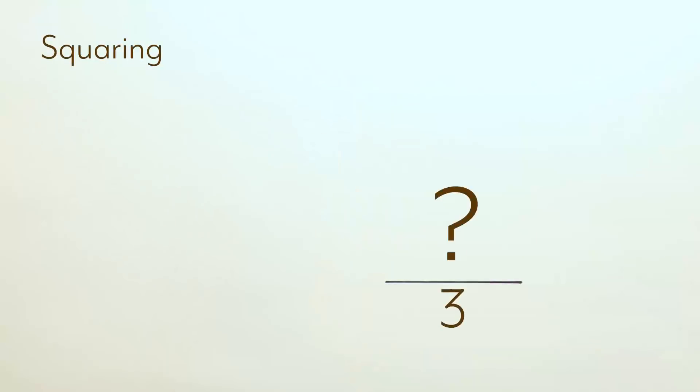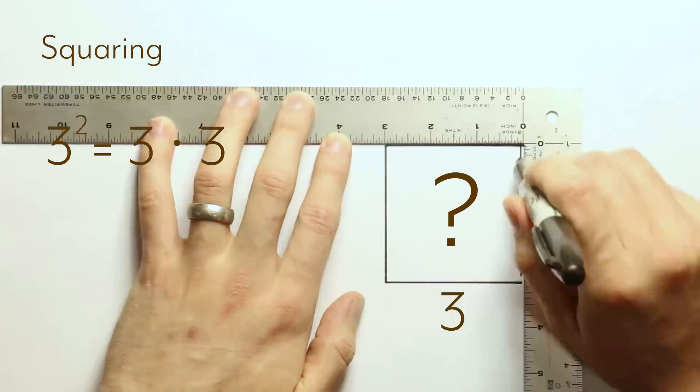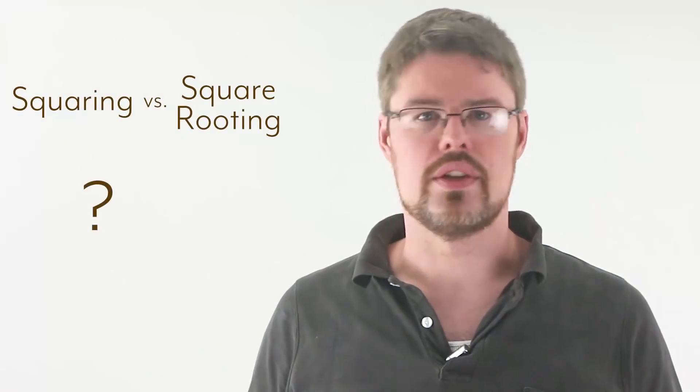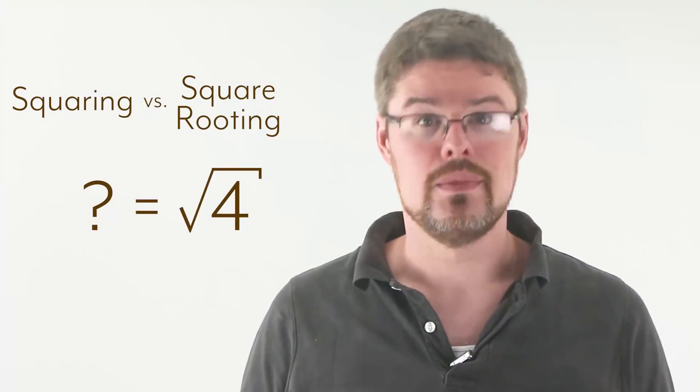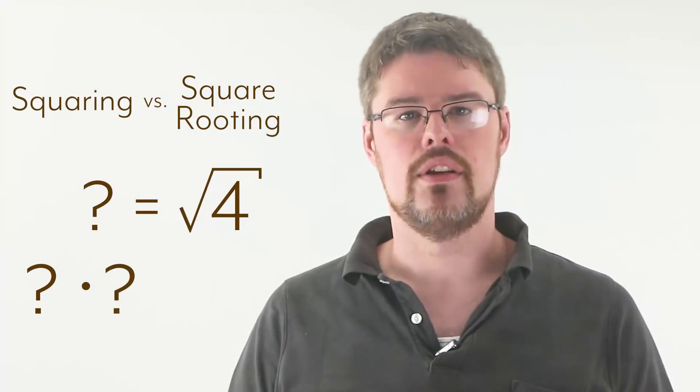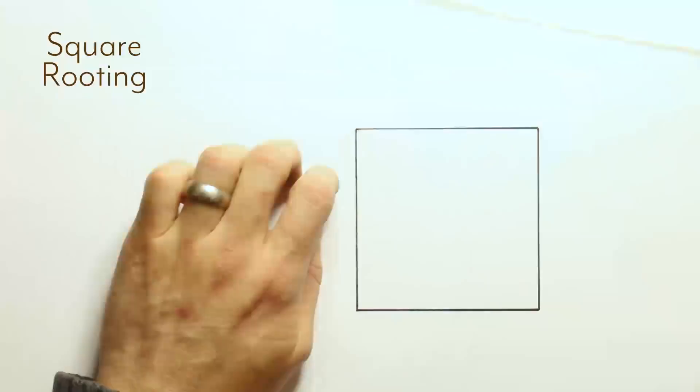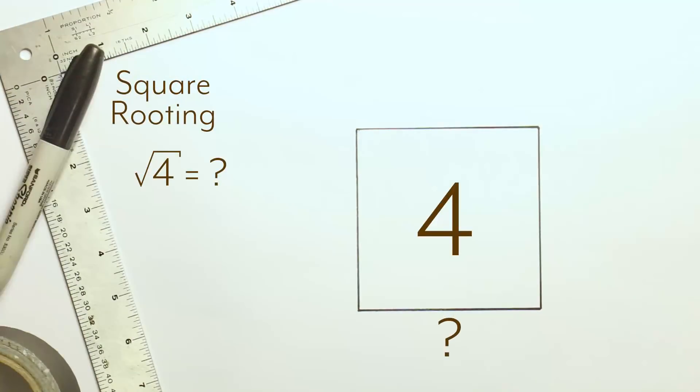What is the square of some given number? The answer? Whatever you get when you multiply the number by itself. So three squared gives you nine. Square roots are the opposite. What is the square root of a number? The answer? Whatever multiplied by itself gives you the number you started with. For example, what is the square root of four? That is what times itself gives you four. The answer is two, because two times two is four.